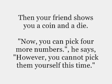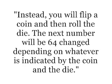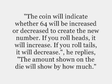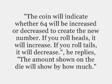Then your friend shows you a coin and a die. You can pick 4 more numbers he says, however, you cannot pick them yourself this time. Instead, you will flip a coin and then roll the die. The next number will be 64 changed depending on whatever is indicated by the coin and the die. The coin will indicate whether 64 will be increased or decreased to create the new number.